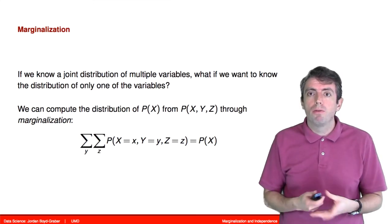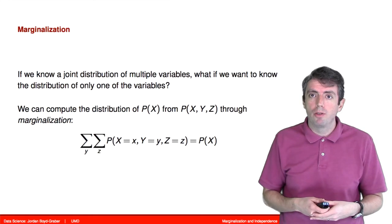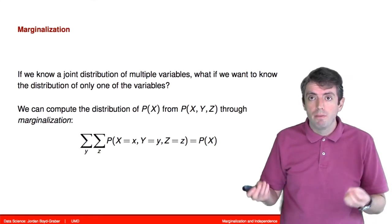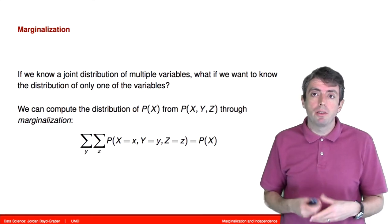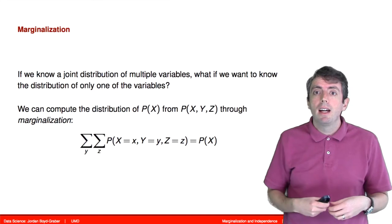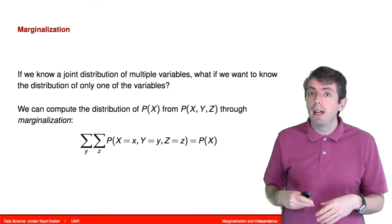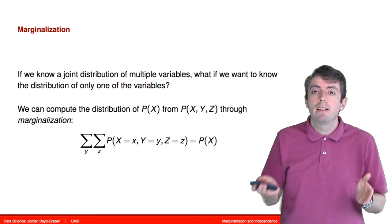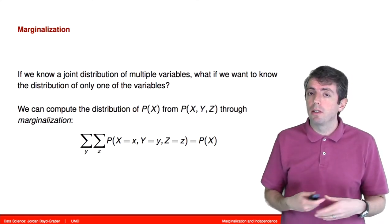Marginalization for a discrete probability distribution means that you have to sum over the random variables that you don't care about. So for example, if you get a joint distribution in terms of X, Y, and Z, and you only care about X, to make Y and Z go away, you sum over all the possibilities for Y and Z to get your distribution only in terms of X.